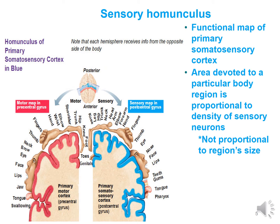The sensory homunculus is a functional mapping of the primary somatosensory cortex, which is located in the post-central gyrus of the brain within the parietal lobe. Along this entire gyrus there are specific areas for specific body parts — everything is very ordered and organized. Sensory information from the foot comes into the medial aspect of the post-central gyrus, whereas information from the teeth or gums arrives more on the lateral aspect.